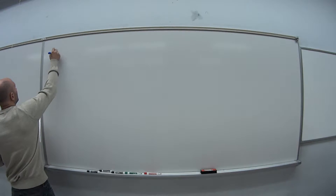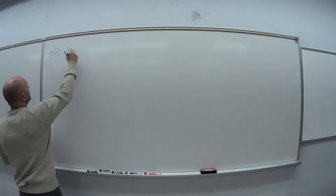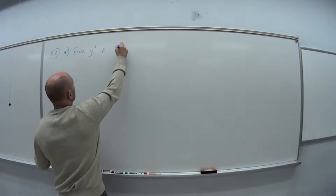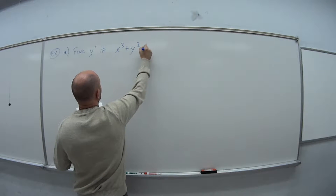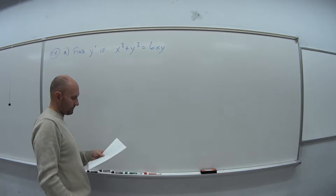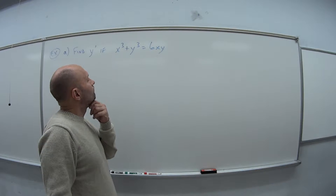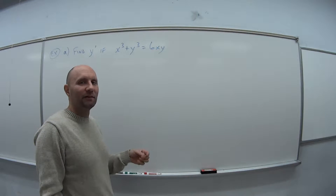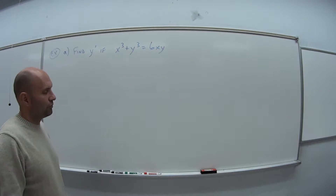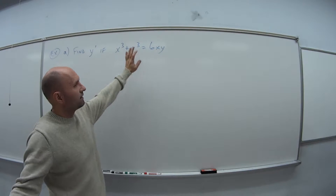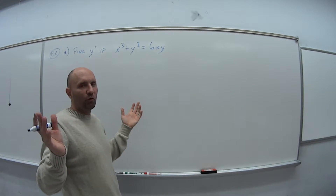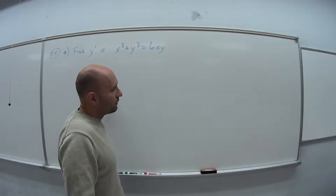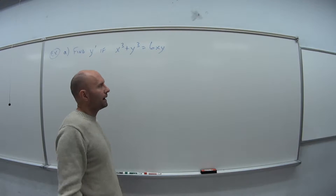The first example we're going to look at is actually two parts. The first part, we want to find y prime if x to the third plus y to the third is equal to 6xy. So we have one equation, a couple of variables. Even if this was not an exam that didn't say use implicit differentiation, we'd know that we have to. From the first video, we just take the derivative of each term as if it's its own entity. But if there's a y term, we add on a y prime because that's what we're looking for. And then once we get that equation, we use algebra to try to get y prime by itself.